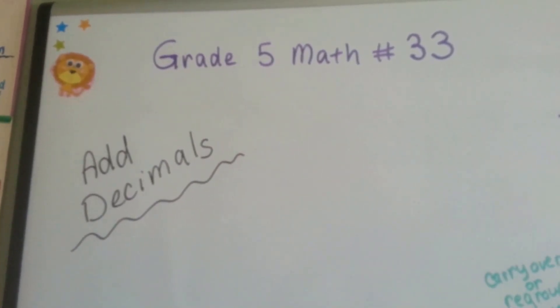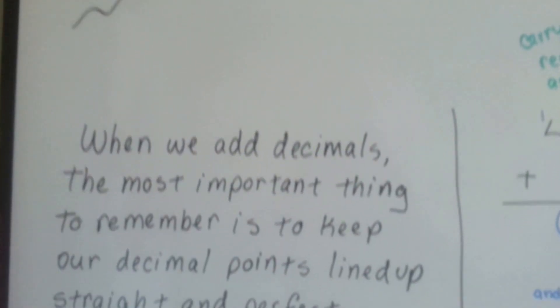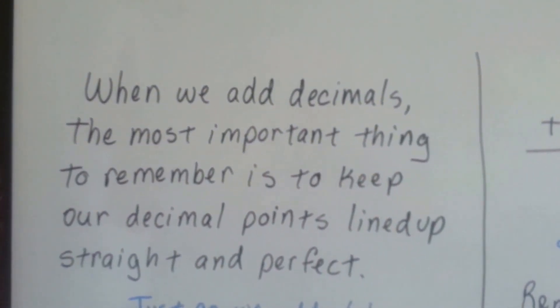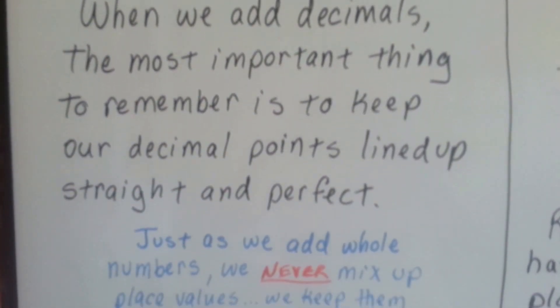Grade 5 math number 33. Add decimals. When we add decimals, the most important thing to remember is to keep our decimal points lined up straight and perfect.